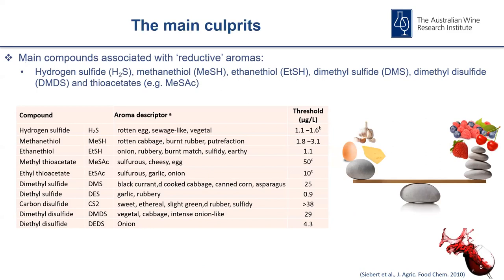Let's have a look at our main culprits. There are many compounds associated with reductive aromas, but the main ones we usually see in wine are hydrogen sulfide, methane thiol, ethan thiol, dimethyl sulfide, disulfides such as DMDS, and thioacetate. Here's a table summarizing common volatile sulfur compounds (VSCs), their aroma descriptors — rotten eggs, sewage, putrefaction, burnt rubber, burnt match, cheesy, eggy, garlicky. They are pretty much not the things you would like in your wine.